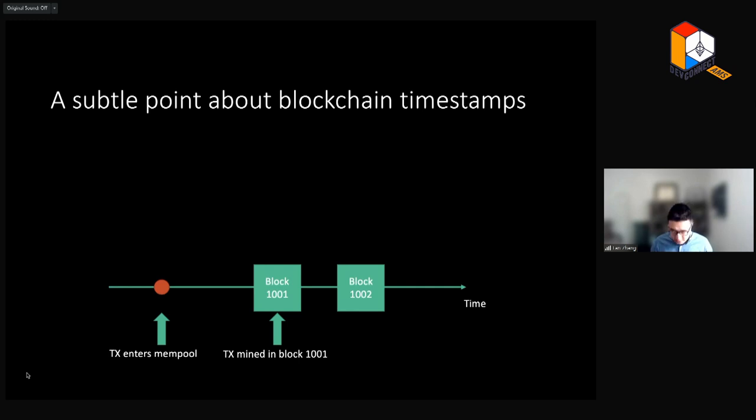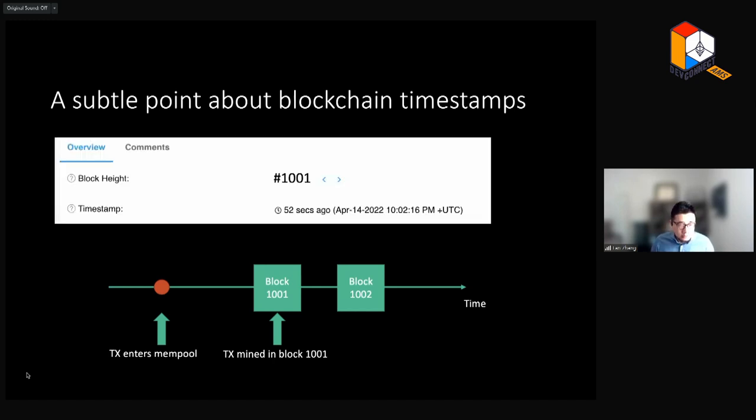So to carry out this study, what we did is we set up a system to collect and record the mempool data approximately one month before the EIP is scheduled to happen. Our mempool collection system currently consists of four nodes geographically distributed across the globe. We are working to add more nodes to this system under the sponsorship of Ethereum Foundation. These nodes run modified Geth clients. They are modified to record transactions as they enter the mempool. They record the timestamp along with the transaction.